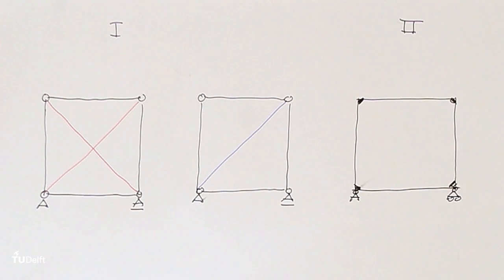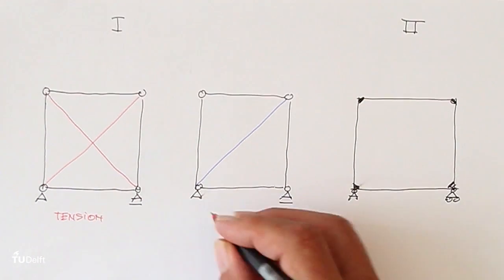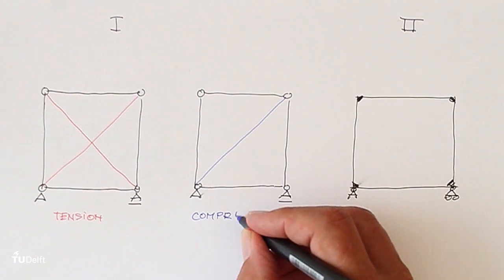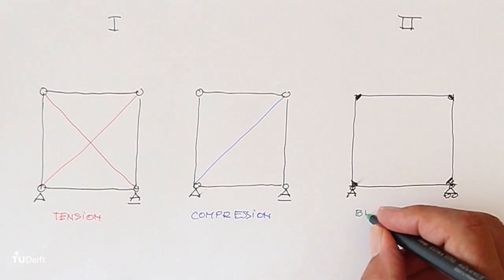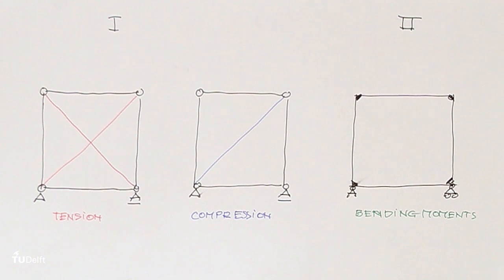The rigid frame is by far the most expensive; the brace frame with tension rods the cheapest. On the other hand, the rigid frame offers a non-obstructed continuity between the spaces on both sides of the frame.